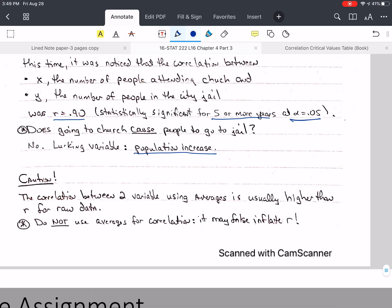So be very cautious. The correlation between two variables, here's another thing. This is separate. So we're moving on from this. Some people are tempted to use averages when they're doing a correlation. Don't do that. That is bad. It's misleading. It's wrong. You will not have good results. You will have better results than you should have. The correlation between two variables using averages is usually higher than it is for the raw data. So do not use averages when you do correlation.